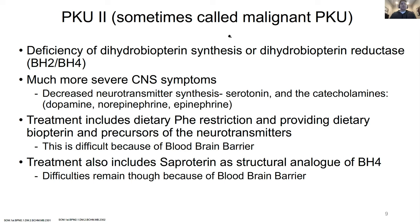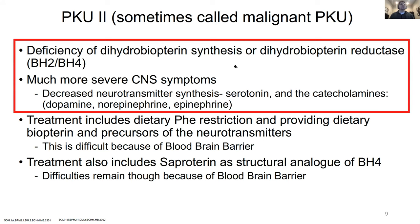PKU2, sometimes called malignant PKU - malignant means more severe. It's not a deficiency of the enzyme phenylalanine hydroxylase; it's actually a deficiency of BH4, or the conversion back to BH4, dihydrobiopterin to tetrahydrobiopterin. BH4 is the cofactor, so you're going to see a problem. BH4 is used as a cofactor for a few reactions, so not only will you get typical PKU symptoms but additional ones as well.